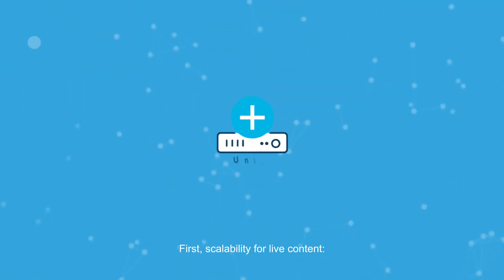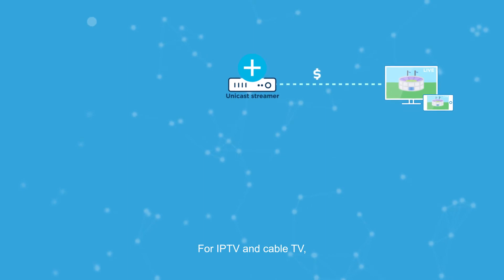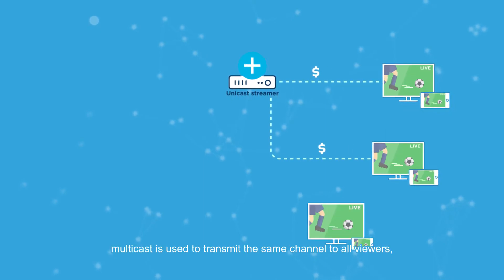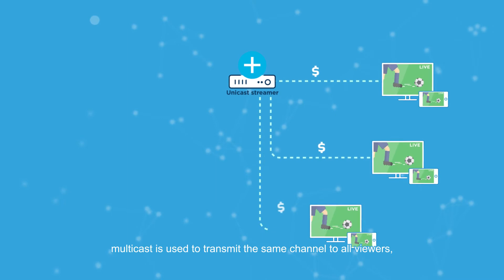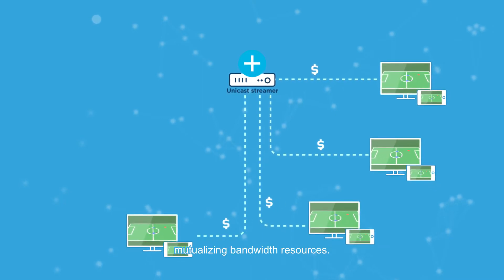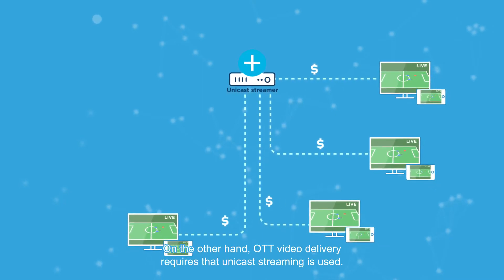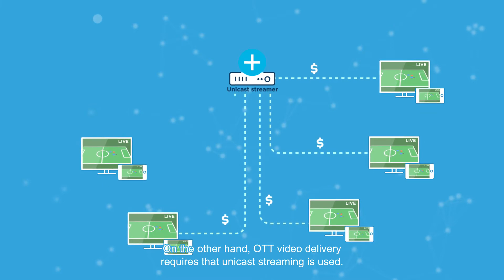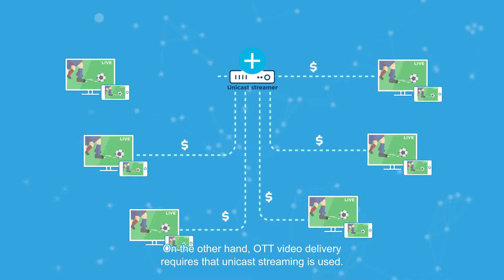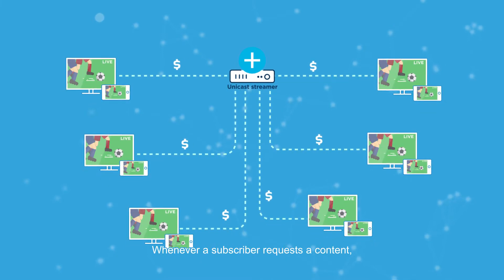First, scalability. For live content, for IPTV and cable TV, multicast is used to transmit the same channel to all viewers, mutualizing bandwidth resources. On the other hand, OTT video delivery requires that unicast streaming is used.